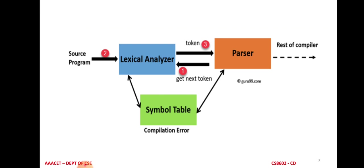Throughout this process, the symbol table interacts with both the lexical analyzer and the parser. The symbol table is a data structure containing a record for each identifier in the source program.